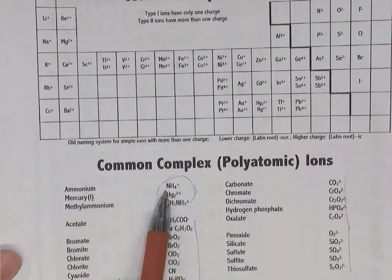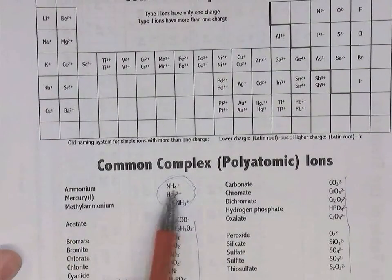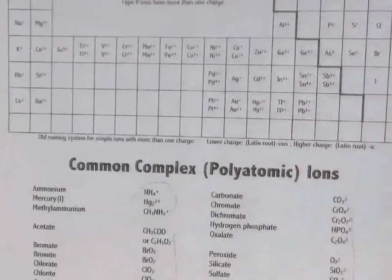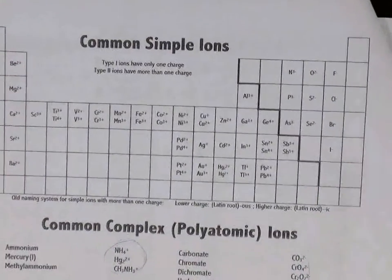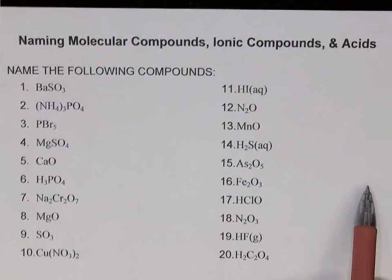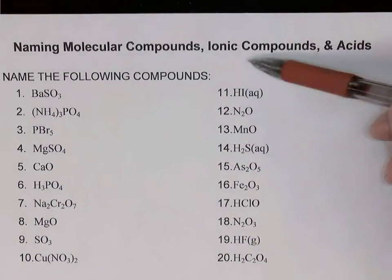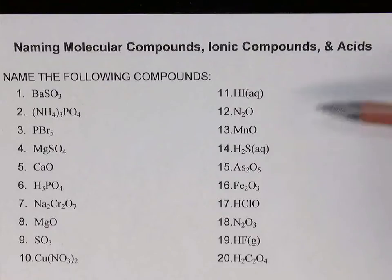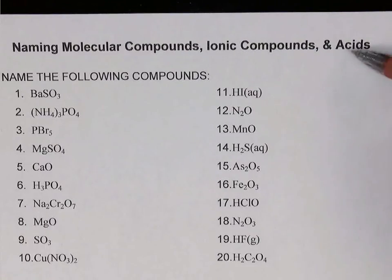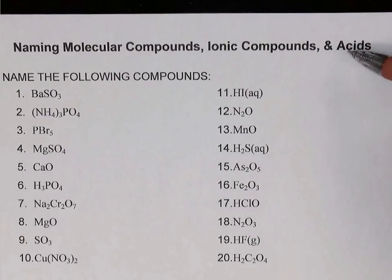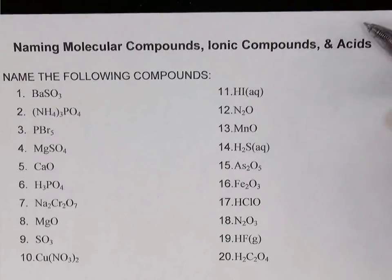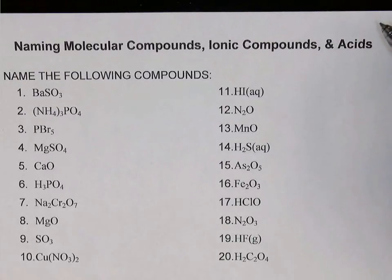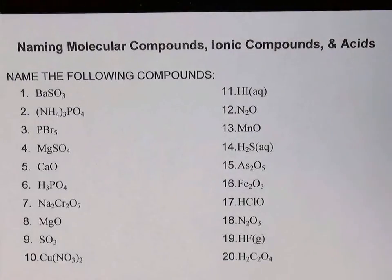Ammonium is the most common complex cation, NH4+. So if you see a metal or NH4+ at the start of a formula, you're looking at an ionic compound. Acids almost always start with hydrogen ions — their formulas will start with hydrogen.